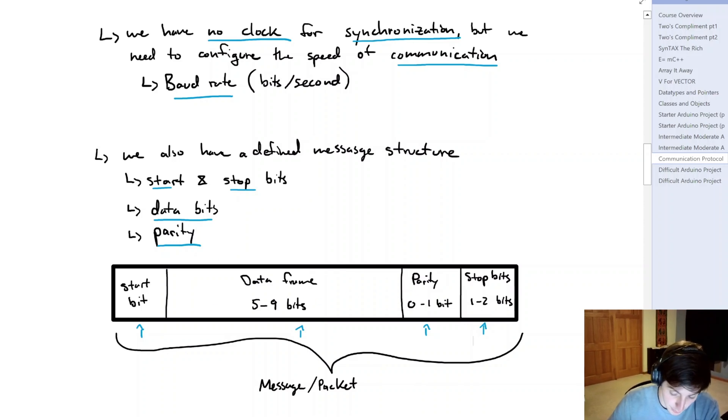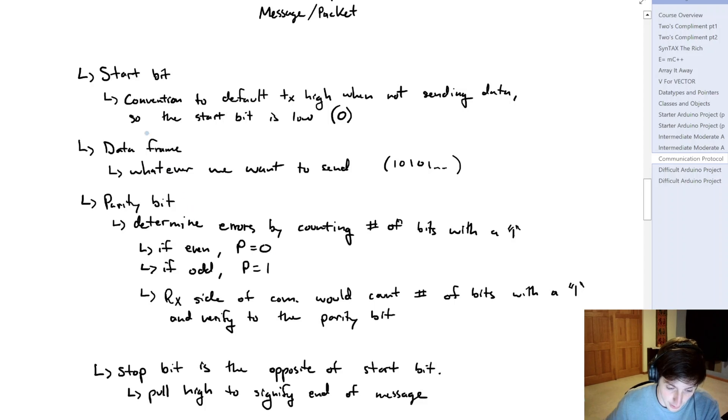So we're going to have a message or what we can call a packet. And that packet of data is going to include some start and stop bits, our data bits, and something called a parity bit. Now if we look into this a little bit more, we can start with our start bit. It is convention to have the transmitting pin high when we're not sending data. So to signify that we are going to send some data, we simply have that start bit low. Our data frame is whatever we want to send. The parity bit is there for determining errors by counting the number of bits that are a one in that data. So if we have an even number of ones, our parity bit is a zero. If we have an odd number, it's a one.